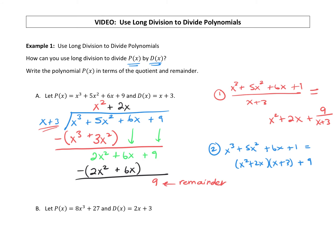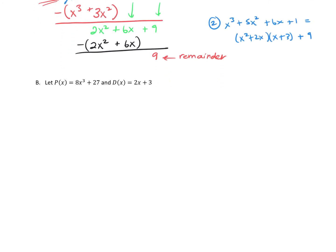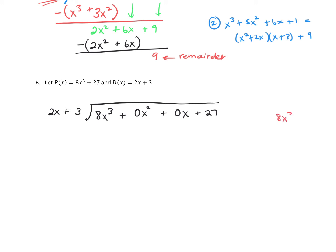Now the second example will go a little faster. We're going to take P(x) divided by D(x): that's 8x³ plus 27 divided by 2x plus 3. Notice we're missing the x² and x terms — we want to represent those in long division, so we throw in 0x² plus 0x as placeholders. Those 0 terms are just placeholders when we do long division.